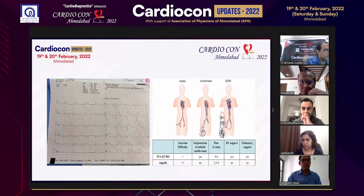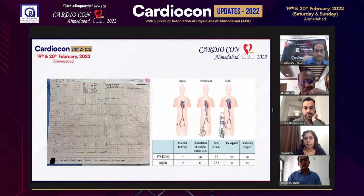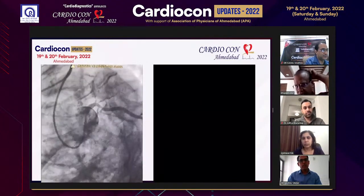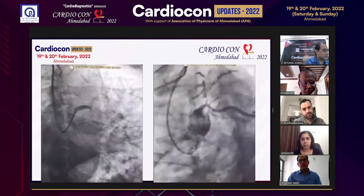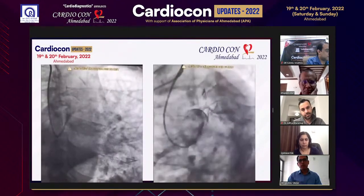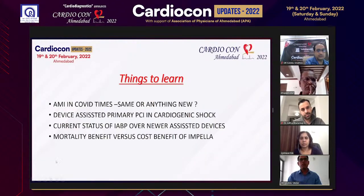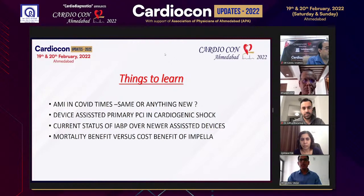This 12-lead ECG shows hyperacute MI with changes in anterior leads. The angiogram shows osteo-proximal LAD occlusion with complex anatomy, ostial involvement, and a lesion in mid-LAD as well. The preferred mechanical assist device — whether Impella, ECMO, or IABP — is our debate. Key learning points: acute anterior wall MI in COVID times, device-assisted primary PCI in cardiogenic shock, current status of IABP versus newer assist devices, and mortality versus cost benefit of Impella.